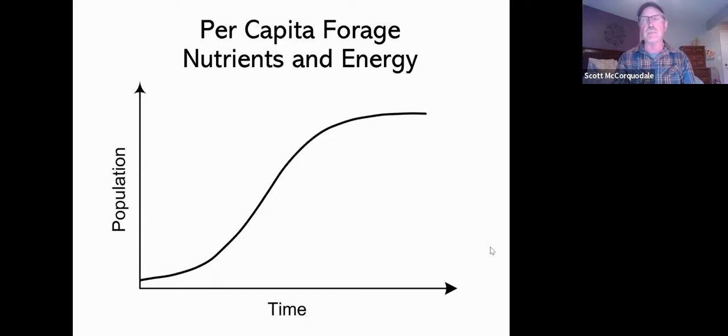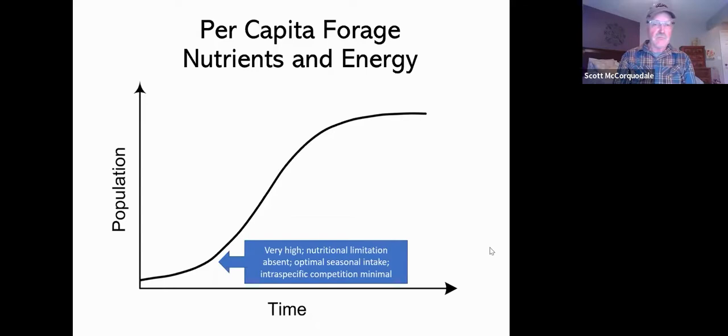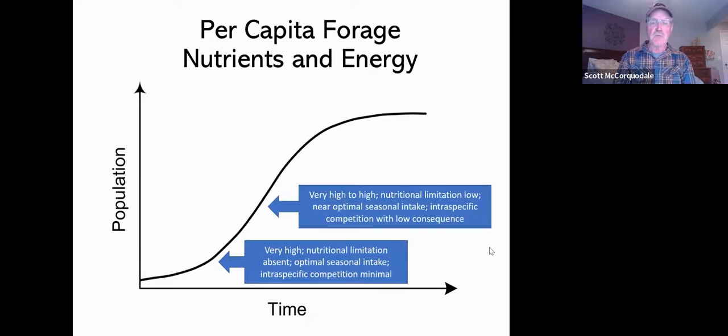We can think about what is happening with the population as it moves along this curve by pondering what we would expect to see in a variety of parameters. One would be per capita forage nutrients and energy. In the colonization phase, that is very, very high—there's almost no nutritional limitation. Animals are getting optimal seasonal intake or very close to it, and intraspecific competition—so animals within this population of ungulates—is pretty minimal. As we move up the curve, it's still very high to high, nutritional limitation is still pretty low, and intraspecific competition may be occurring but it has pretty low consequence.